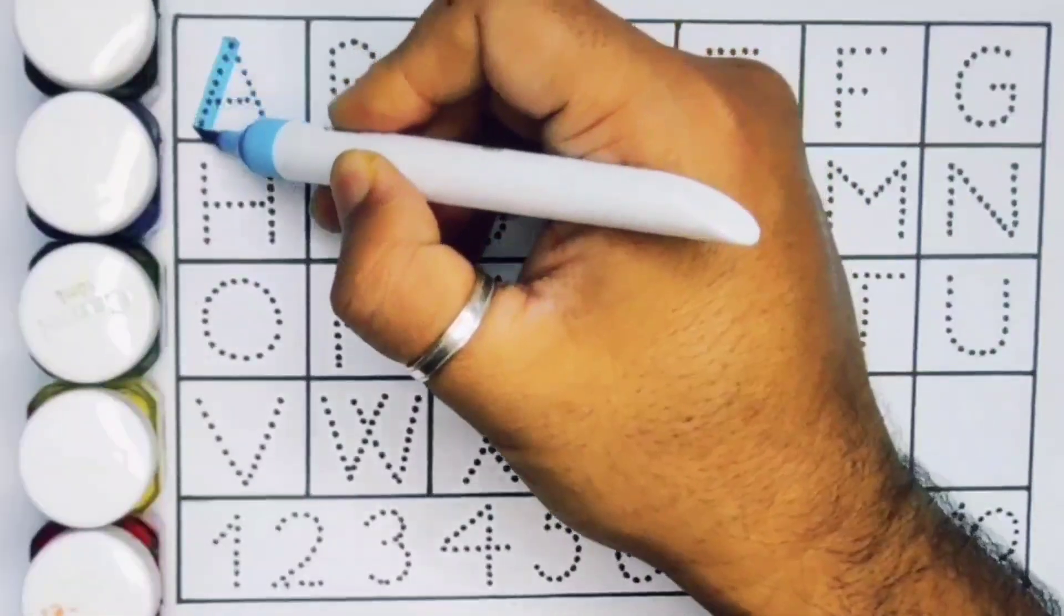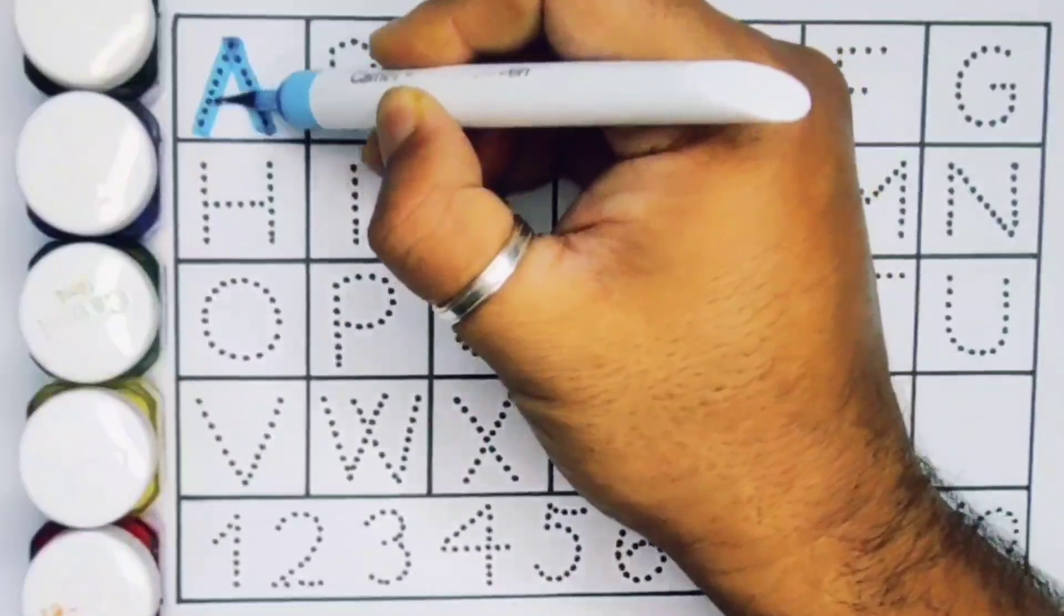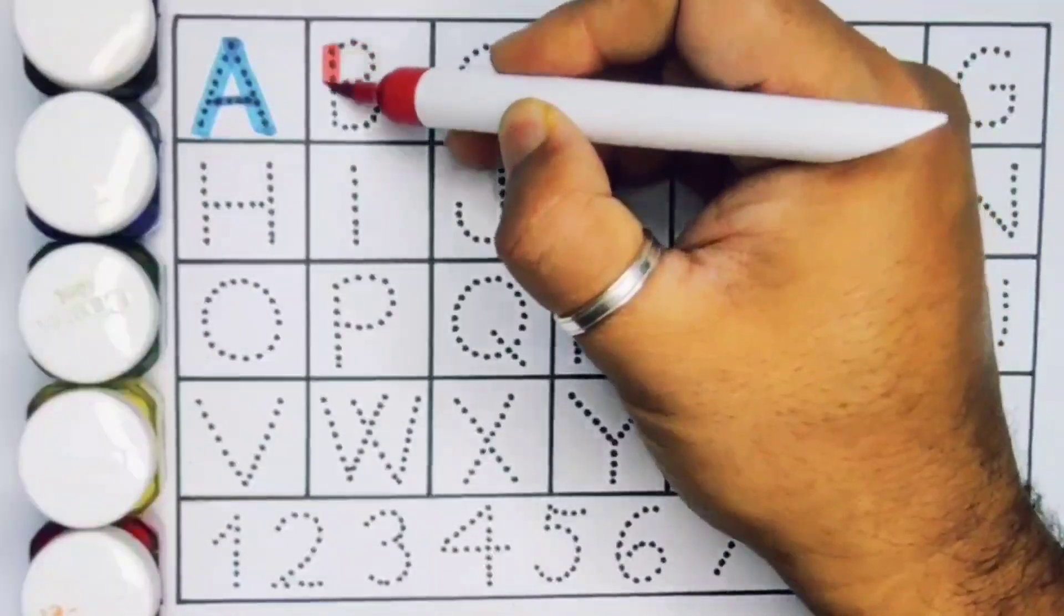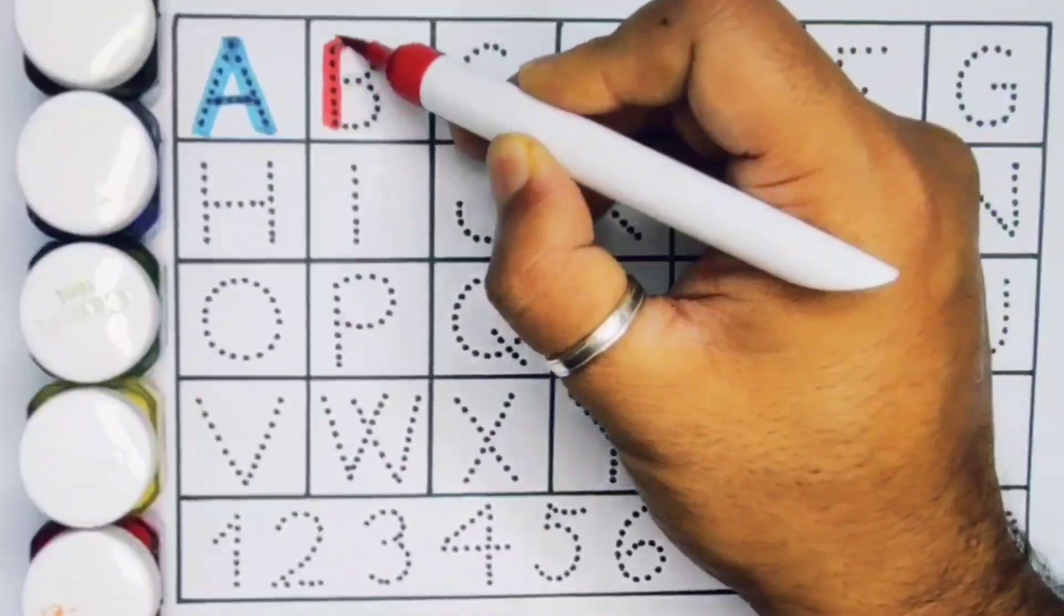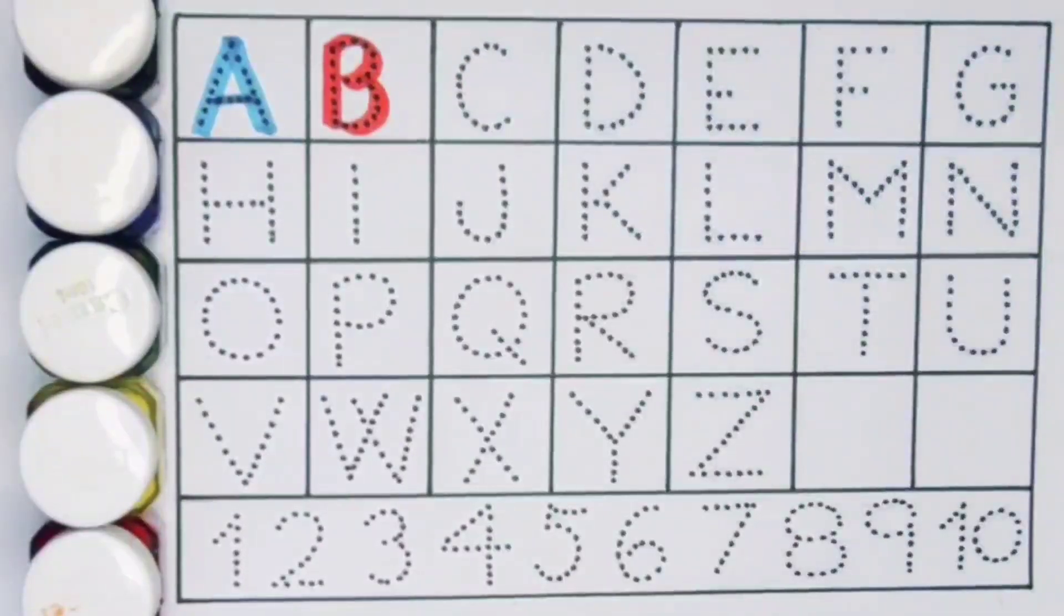First A, A for Aeroplane. A for Aeroplane. Next B, B for Bait. B for Bait.